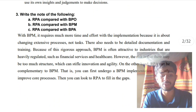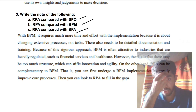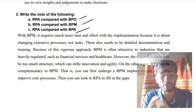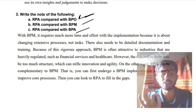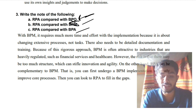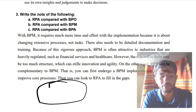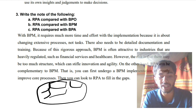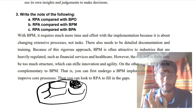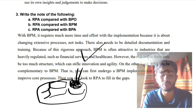The third super important question is: compare RPA with BPO, BPM, and BPA. First remember the full forms. BPO is Business Process Outsourcing. BPM is Business Process Management — the business is being managed. In BPM, the business will have small parts for each task, and one of those tasks will be performed by RPA. The whole business won't be automated — only a small part will be automated.